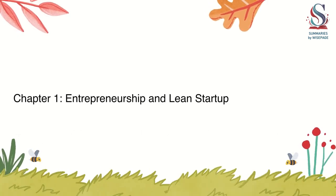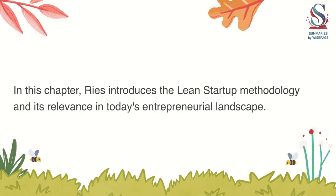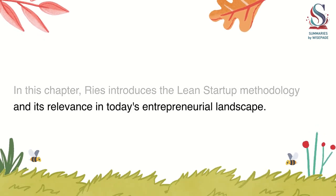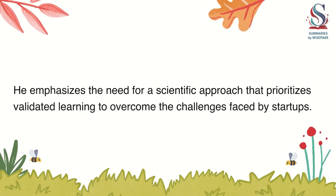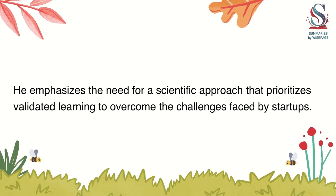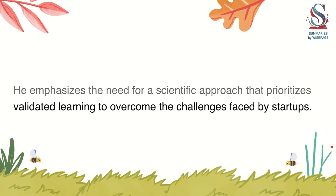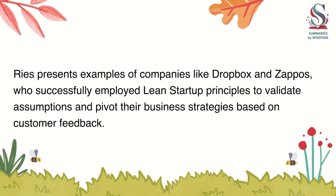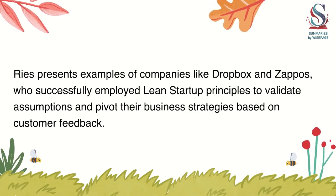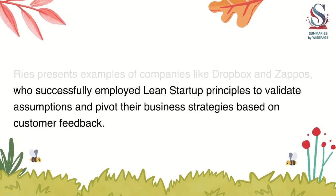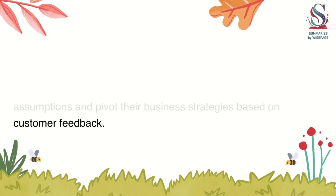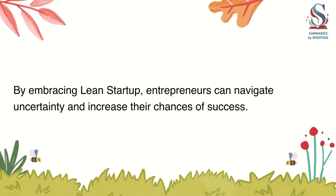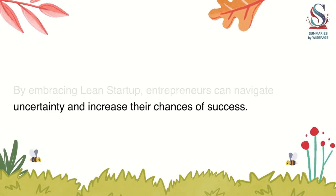Chapter 1: Entrepreneurship and Lean Startup. Ries introduces the Lean Startup methodology and its relevance in today's entrepreneurial landscape. He emphasizes the need for a scientific approach that prioritizes validated learning to overcome the challenges faced by startups. Ries presents examples of companies like Dropbox and Zappos, who successfully employed Lean Startup principles to validate assumptions and pivot their business strategies based on customer feedback. By embracing Lean Startup, entrepreneurs can navigate uncertainty and increase their chances of success.